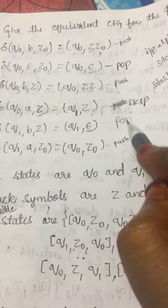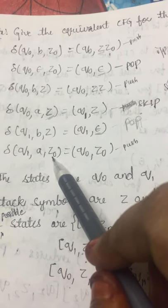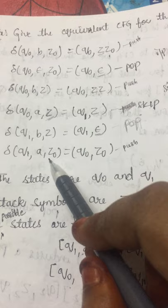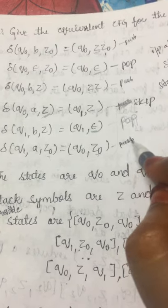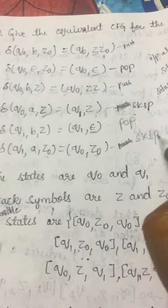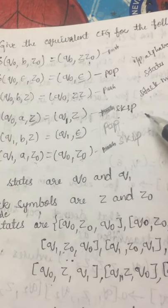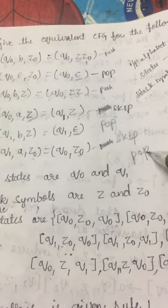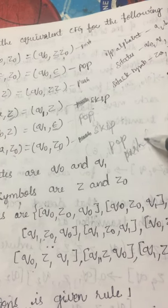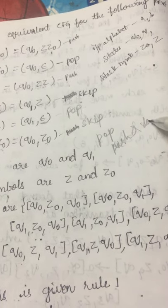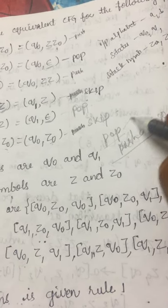The transition with epsilon output indicates pop operation. For skip operation, Z₀ remains as Z₀ — that is skip, not push. There is a separate procedure for pop operation and a separate procedure for push and skip operations. The same procedure applies for both push and skip, and a different procedure applies for pop.